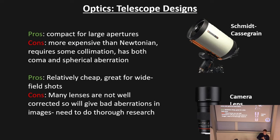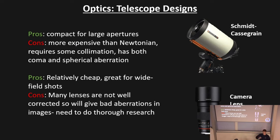Camera lenses are often overlooked because they're not telescopes, but they're relatively cheap and available and are great for wide-field shots. Telescopes tend to have an extremely narrow to quite narrow field of view, so if you want anything on the constellation size or bigger, camera lenses are the way to go. However, many lenses aren't well corrected and will give very bad aberrations in images, because they're designed for daytime use. So you need to do thorough research before buying a lens for night sky photography.